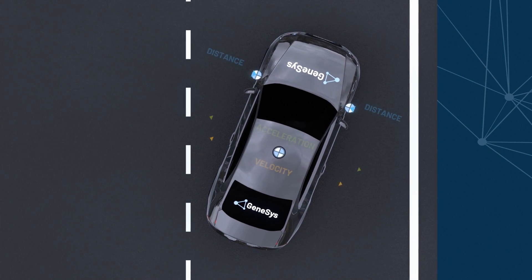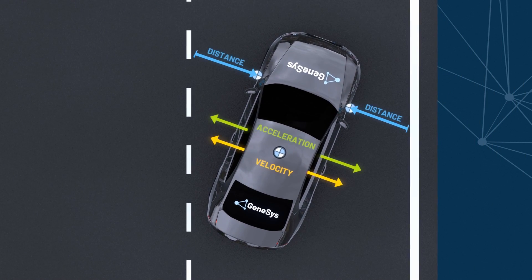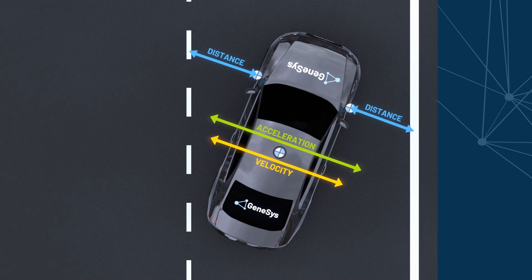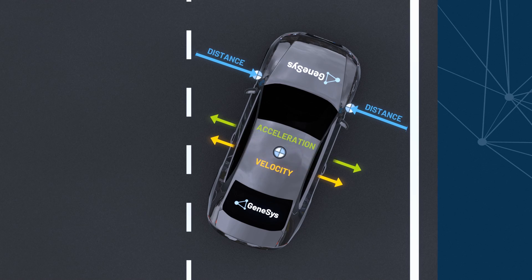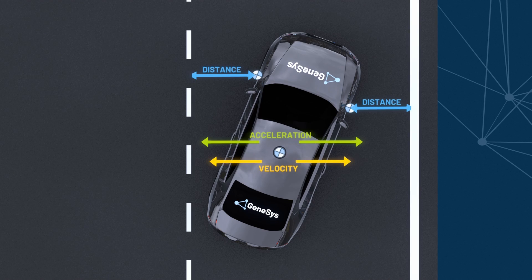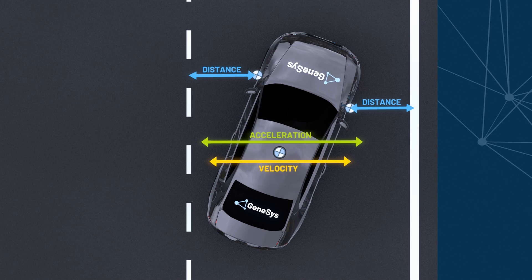The LatDef output contains the following values: lateral distances, velocities, and accelerations to the defined lines, as well as shortest distances, perpendicular accelerations, and velocities to line 1 and line 2.